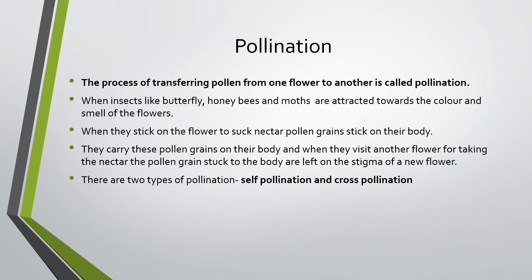Next is pollination. What is pollination? Various insects like butterflies, honeybees, or moths are attracted to the color and smell of the flower. When these insects sit on the flower to suck the sweet nectar, pollen grains stick to their body. They carry these pollen grains on their body, and when they visit another flower and sit on it, the pollen grains stick onto the stigma. In this way, pollen grains are transferred from one plant to another. This is known as pollination.